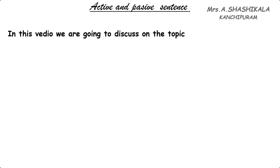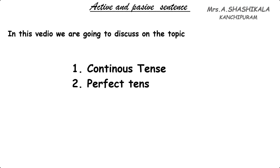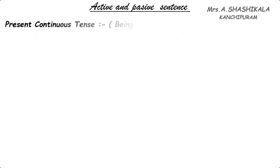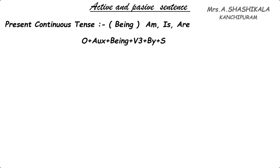Today we are going to see the active and the passive sentence in the continuous tense and in the perfect tense. The first one is the present continuous tense. In the present continuous tense, the verb will be with auxiliary verb plus ing in the active voice. When it changes to passive, we are going to use the B form of the verb 'being', which shows the continuous tense in the passive.